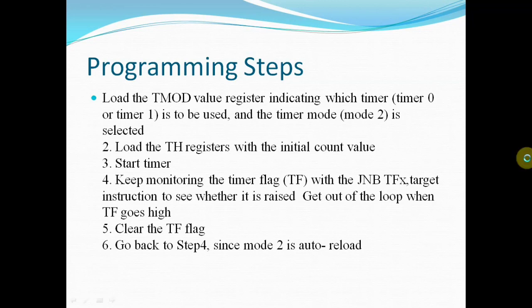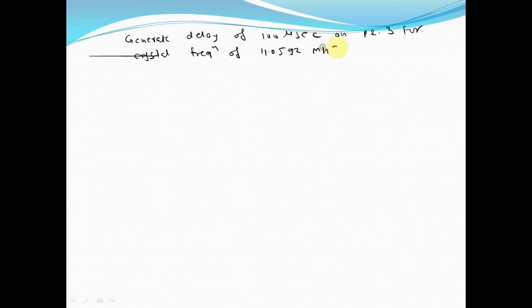Now we will take one example programming problem and write a program in assembly language. Generate a delay of 100 microseconds. First, we will calculate the count value corresponding to 100 microseconds.